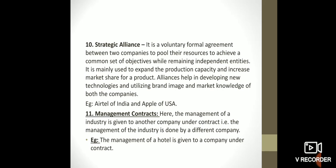Management contract is when the management of an industry is given to another company under contract — that is, the management is done by a different company. For example, the management of a hotel is given to a company under contract, like a canteen contract for a hospital. Even in colleges, the canteen is given to someone else, the management of the garden is given to someone else, and the appointments of non-teaching faculty are also given to someone else. This is called a management contract.